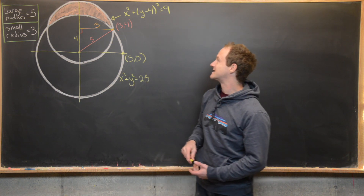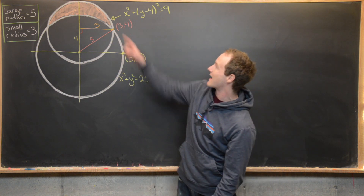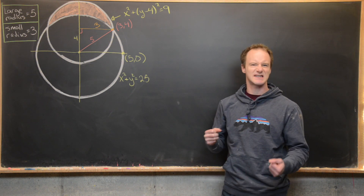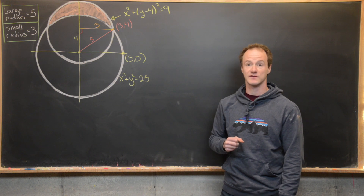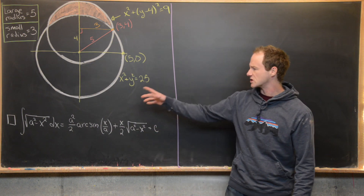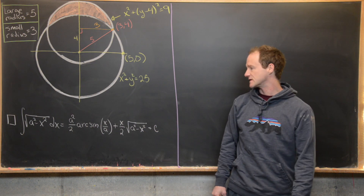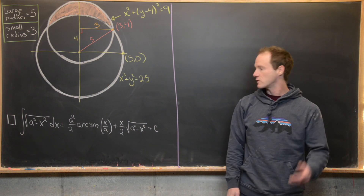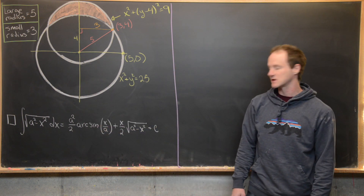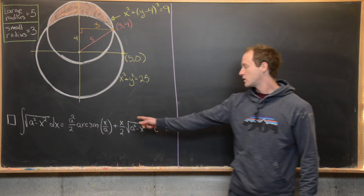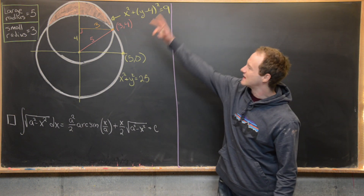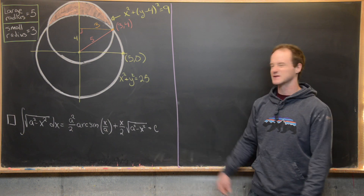We're just about ready to set up an integral to calculate the shaded area. But first it'll be useful to build a standard formula. This integral is going to show up in our calculation in two places: the integral of √(a² − x²), which equals (a²/2)·arcsin(x/a) + (x/2)·√(a² − x²) + C. Since we'll have a definite integral, the constant won't really matter. Let's go ahead and derive this formula.